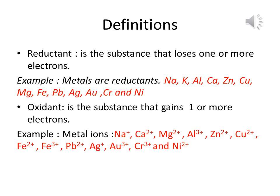An oxidant is the substance that gains one or more electrons. An example of an oxidant is a metal ion, like sodium (Na⁺), calcium (Ca²⁺), magnesium (Mg²⁺), aluminum (Al³⁺), zinc (Zn²⁺), copper (Cu²⁺), iron (Fe²⁺ and Fe³⁺), lead (Pb²⁺), silver (Ag⁺), gold (Au³⁺), chromium (Cr³⁺), and nickel (Ni²⁺).